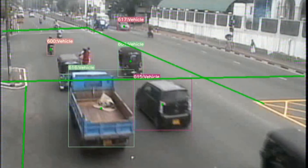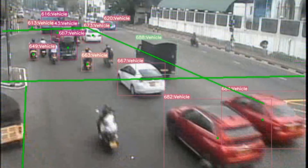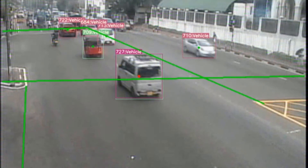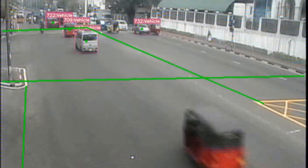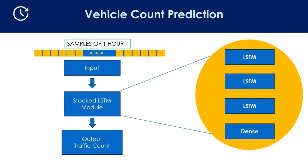Our vehicle count algorithm is able to count moving vehicles with 87% accuracy and is capable of detecting multiple CCTV camera feeds simultaneously. For a single intersection, our solution is implemented in a three-way intersection with six different traffic flow directions and a four-way intersection with 12 different traffic flow patterns. An LSTM-based prediction algorithm is used to predict traffic and represent long-term fluctuations of traffic count.